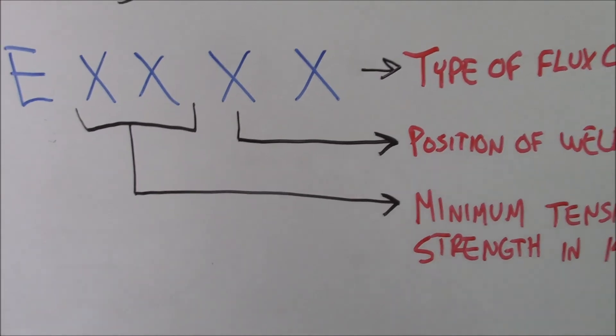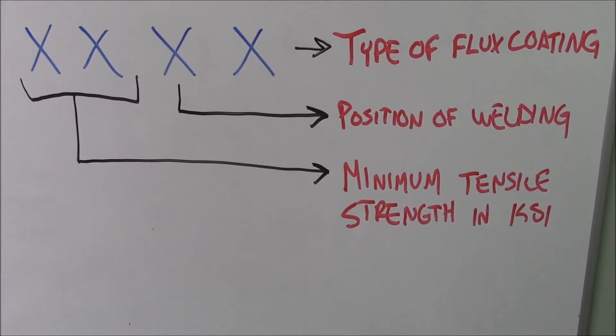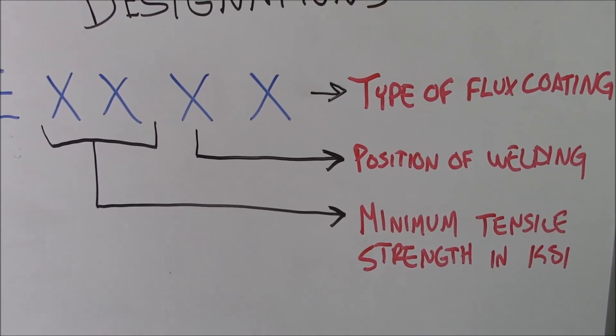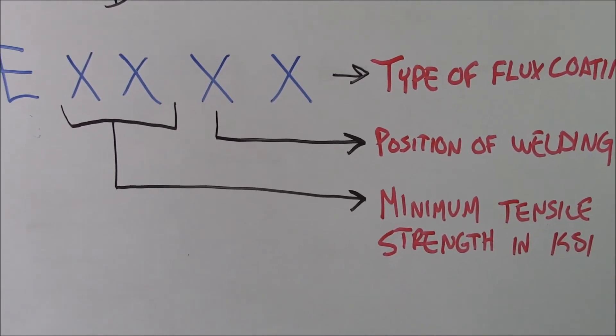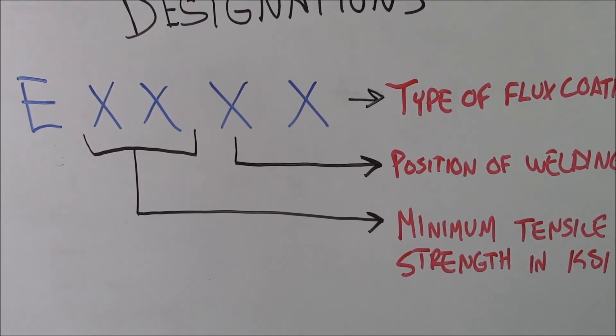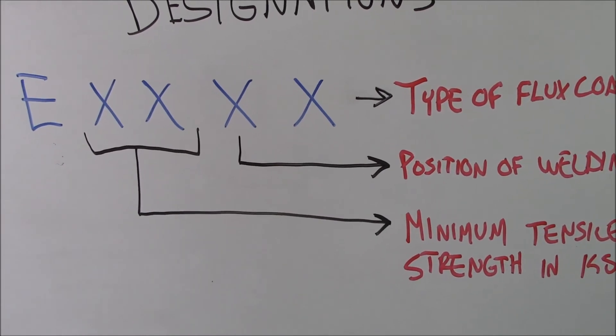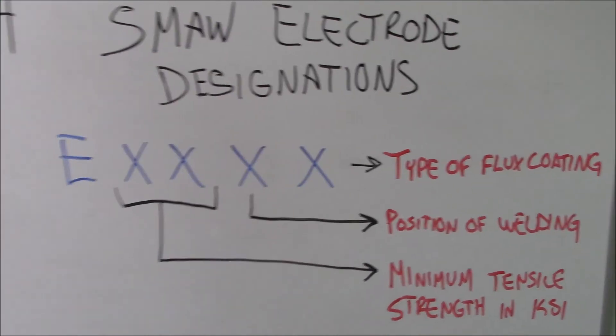So what that means is that when I get into the minimum tensile strength, if you were to weld up a sample that's just all weld metal, that sample has to pull at a minimum of 70,000 PSI in order for that to be an acceptable batch of material.